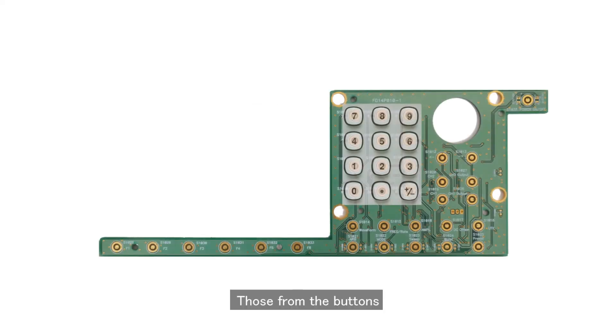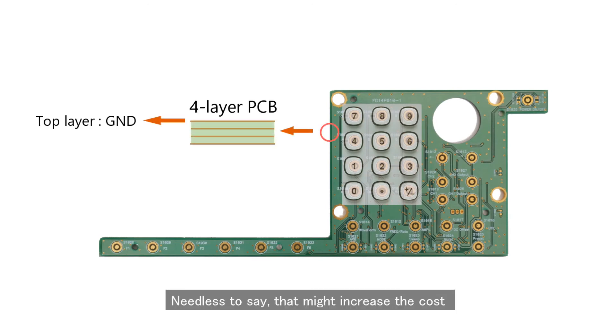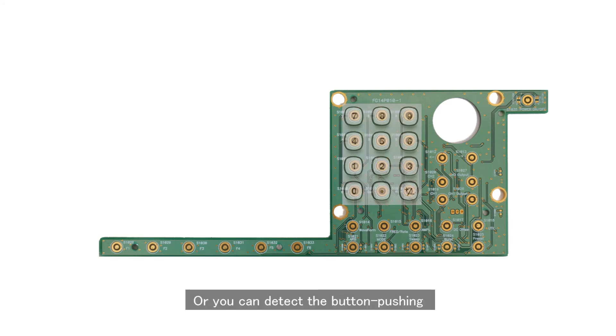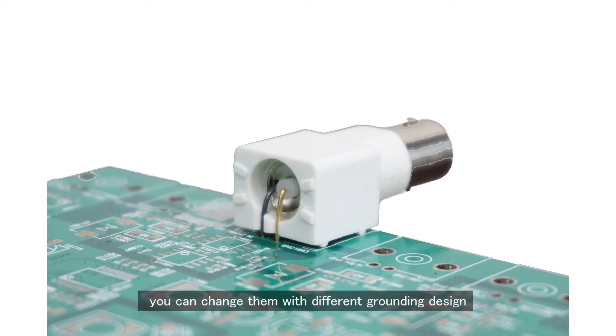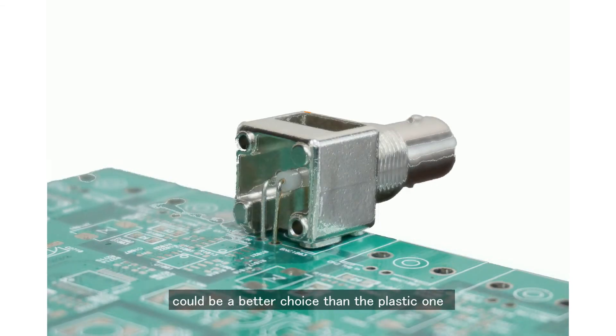Those from the buttons, you can use multi-layer PCB board, which the top layer has to be ground. Needless to say, that might increase the cost. Or you can detect the button pushing by interrupt instead of polling. As for those from BNC terminals, you can change them with different grounding design. Like this metal terminal could be a better choice than the plastic one.